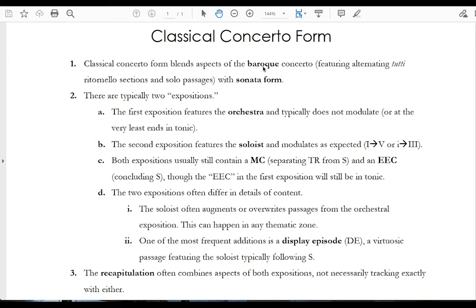The first is the Baroque concerto, and from the Baroque concerto, the classical concerto pulls the idea of alternating ritornello sections featuring the entire ensemble with solo passages, obviously featuring the soloist or group of soloists. And then the other form is sonata form. From sonata form, classical concerto pulls the large sections: exposition, development, and recapitulation.